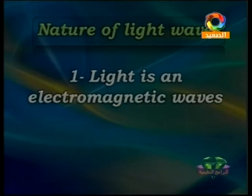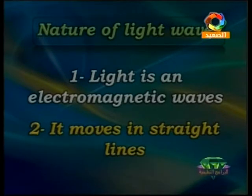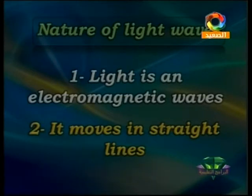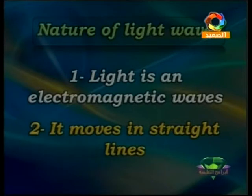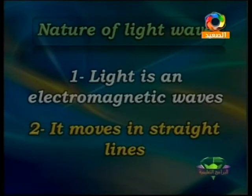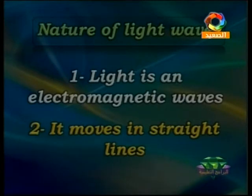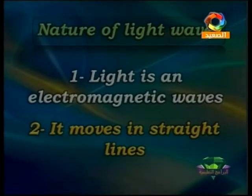Next, we have the nature of light waves. Number one: light consists of electromagnetic waves — a type of waves found in our life. The term electromagnetic means it comes from two types of waves: magnetic waves and electric waves. These two types of energy come together to make the light waves.